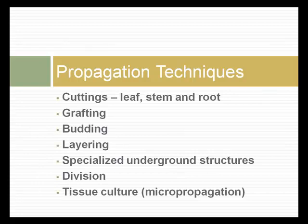Layering, propagation from specialized underground structures — roots, rhizomes, corms, bulbs. Plants can be easily propagated through division, which basically means digging underground and dividing an existing clumping plant into two or more new plants. And then tissue culture, this whole area of micropropagation, is being used for many of our horticultural plants.